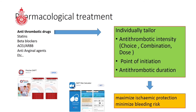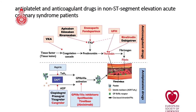For pharmacological treatment of non-STEMIs, we have a large armory including antithrombotic drugs, statins, beta blockers, ACE inhibitors, ARB blockers, antianginal agents, and more. Today I will mainly address antithrombotic drugs. These should be individually tailored for proper antithrombotic intensity through correct choice, combination, dose, timing of initiation, and duration — all important to maximize ischemic protection, reduce further ischemic events, and most importantly minimize bleeding risk.